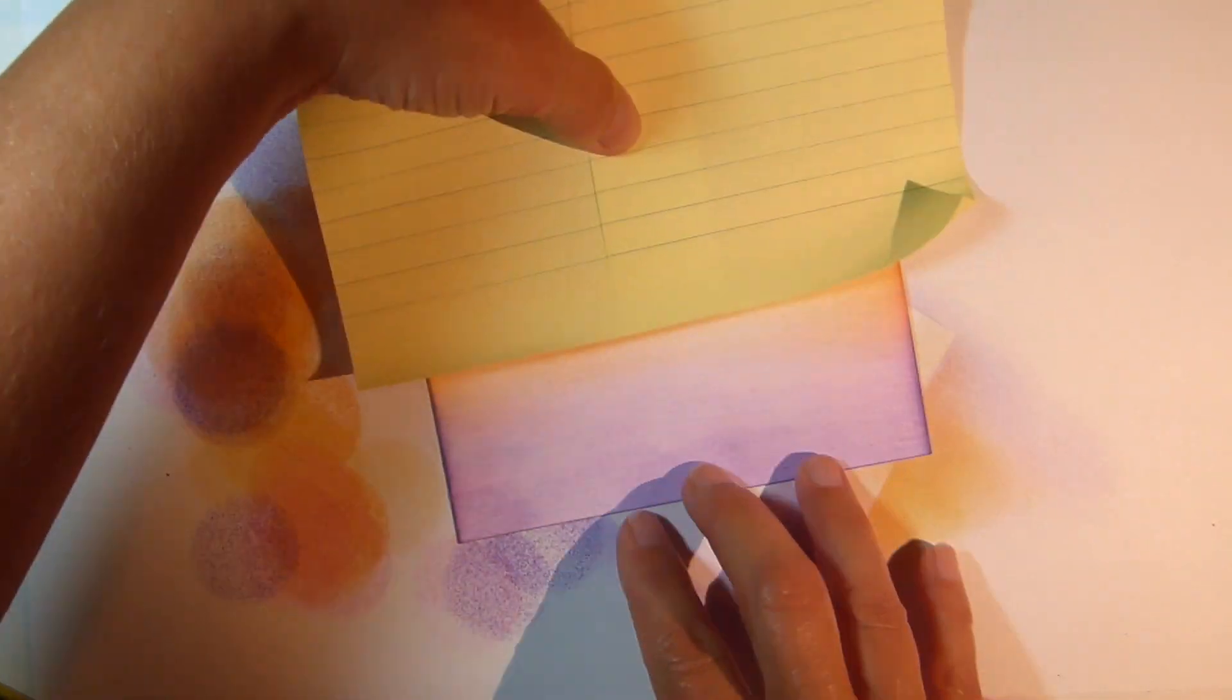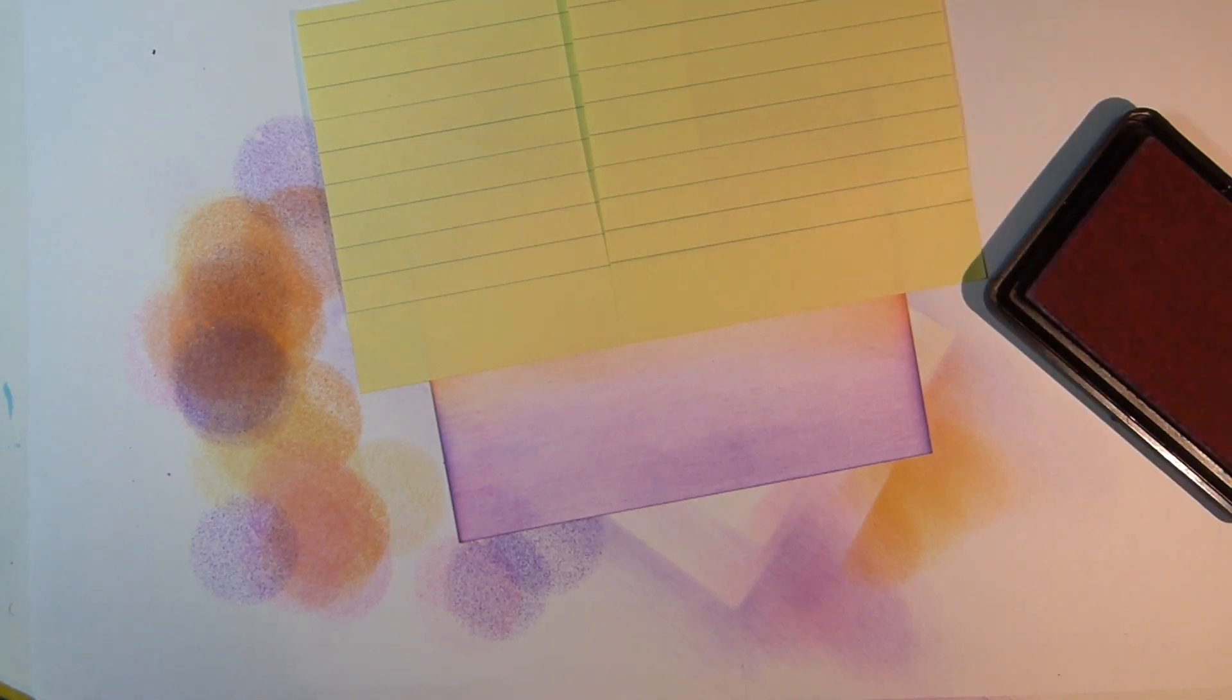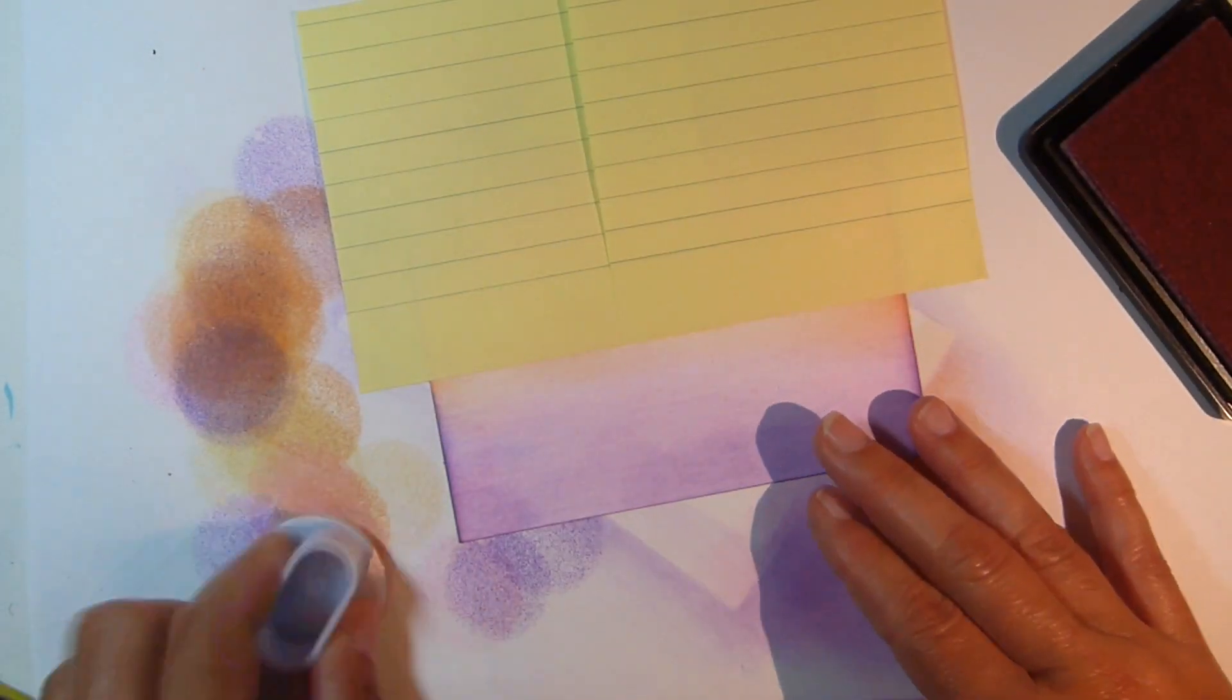Use some sticky notes to mask off where you'd like the horizon line to be, and then use the swiping technique and Gina K Bubblegum Pink ink to swipe along that mask line.